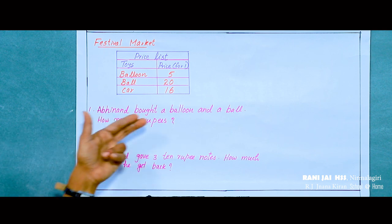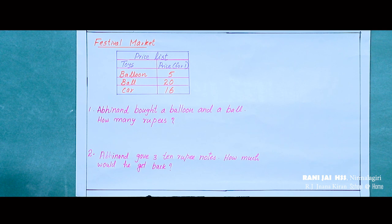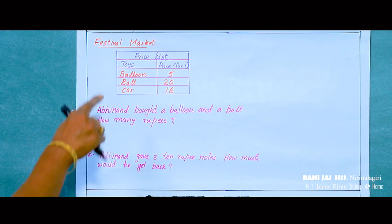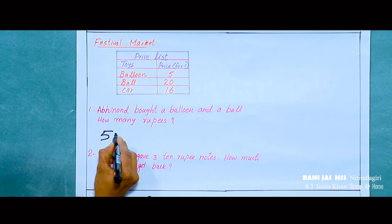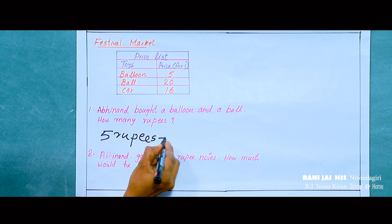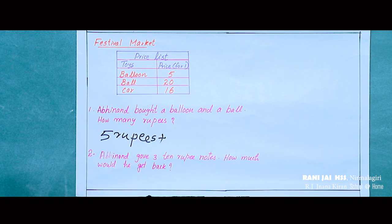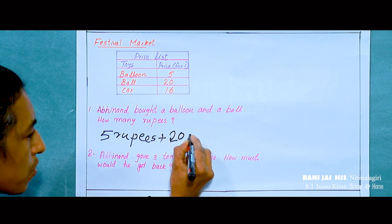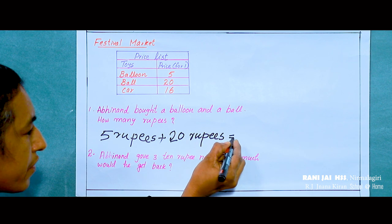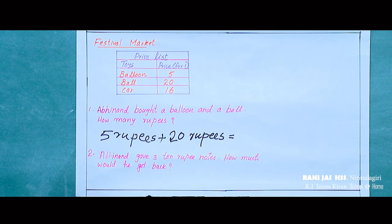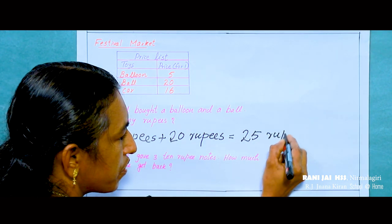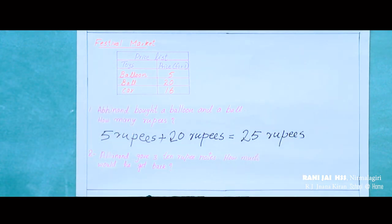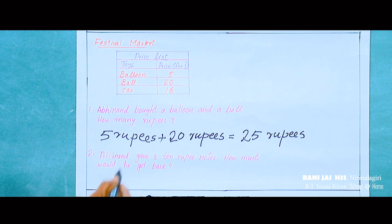What is the first question? Abhinant bought a balloon and a ball. What is the total price? The price of a balloon is 5 rupees, and the price of a ball is 20 rupees. So 5 plus 20 — what is the answer? Yes, good — 5 plus 20 is equal to 25 rupees.